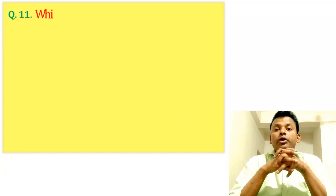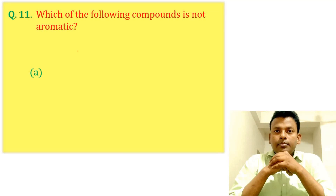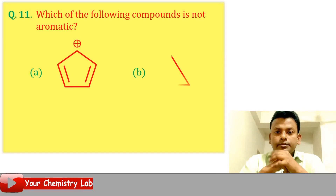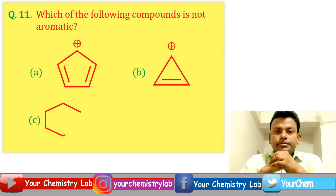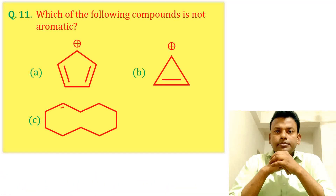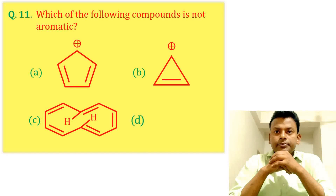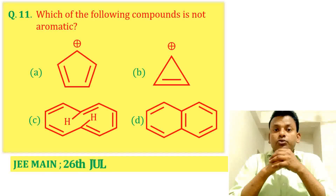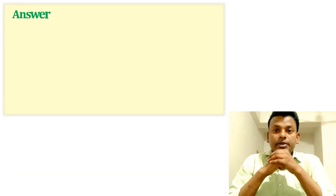Question 11: Which of the following compounds is not aromatic? This question was set in JEE Main 26th July 2022 Morning Shift. Answer: Option C is correct — it is not aromatic.